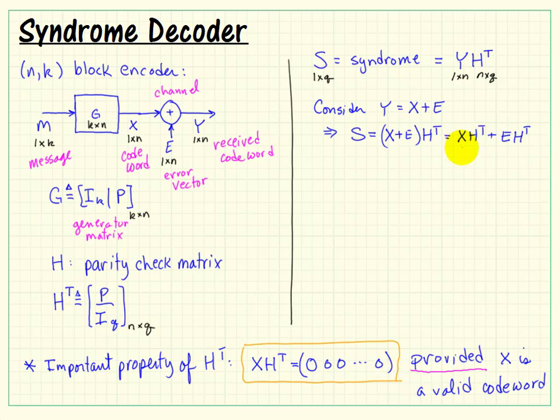We already know that X H transpose is 0 because X is supposed to be a valid codeword that was transmitted. So the interesting thing about this syndrome is that the value is exclusively a property of the error vector. It depends only on the error pattern. It doesn't have anything to do with the particular arrangement of your code bits.